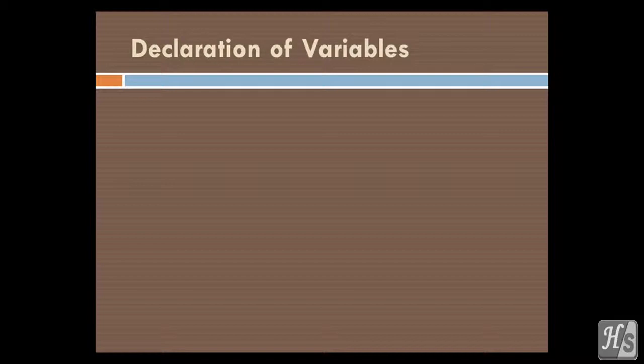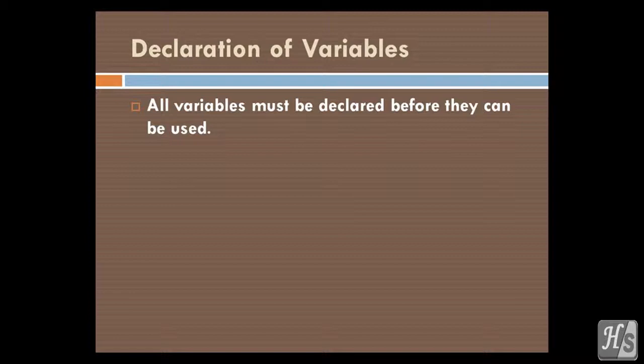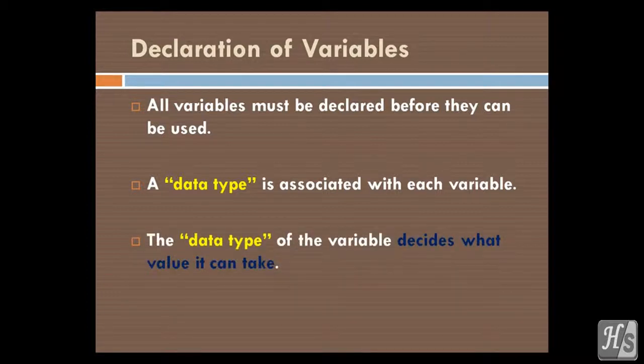Declaration of variables. All variables must be declared before they can be used. A data type is associated with each variable. The data type of the variable decides what value it can take.